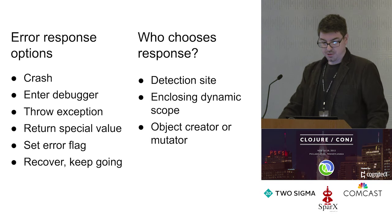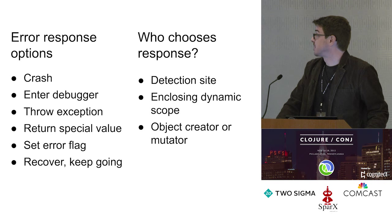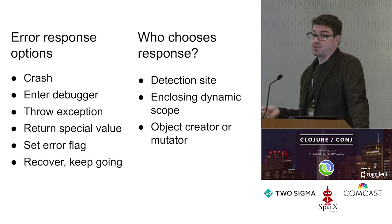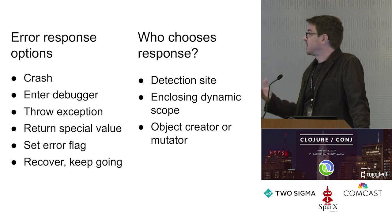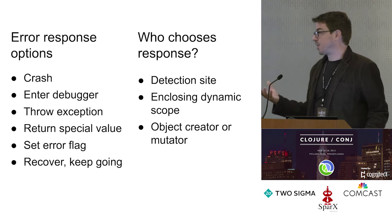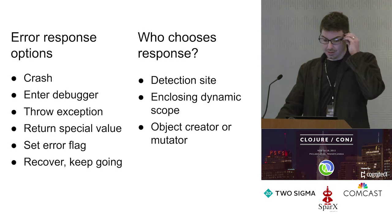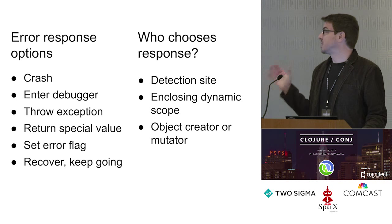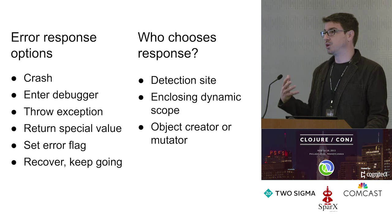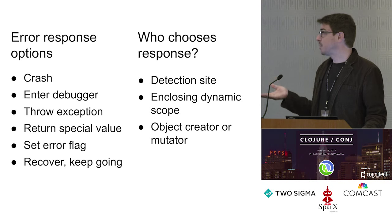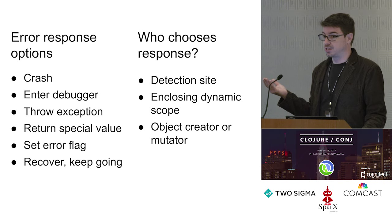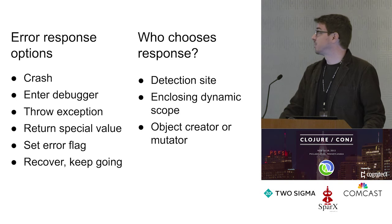I want to mention three things about who chooses the response taken. The detection site — the moment you discover there's an error, you could choose one of these responses. The enclosing dynamic scope can sometimes influence the option that ends up being chosen. And the object itself will sometimes contain an error handler, so anything that can create or mutate that object may be able to choose one of these options. This is probably one of the more practical points: think about this whenever you're writing a library. Don't just assume that throwing an exception is the right thing to do — think about who's going to want to control it and what kinds of options you'd like them to choose between.